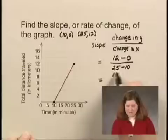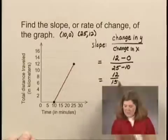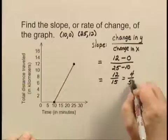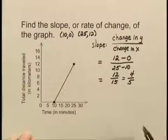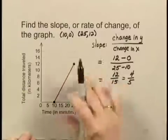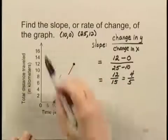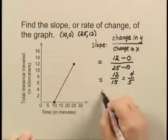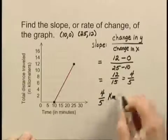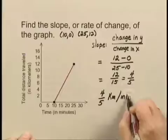That gives me 12 fifteenths, which simplifies to 4 fifths. Since I'm given units, I can write the slope of the line without units would be 4 fifths. The rate of change would then be 4 fifths kilometers per minute.